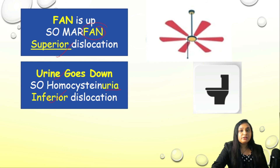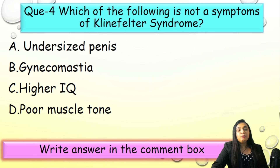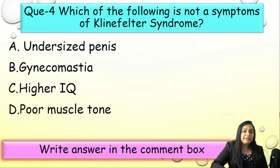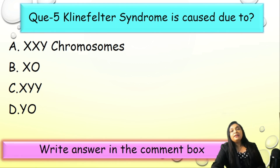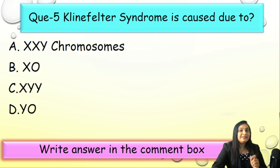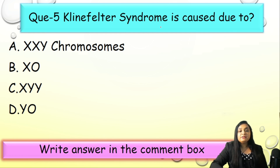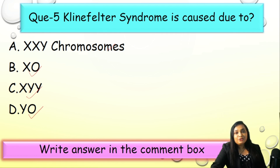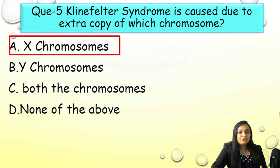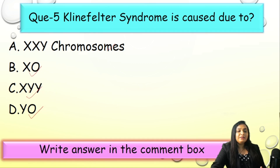Question 4: Which is NOT a symptom of Klinefelter syndrome — A) undersized penis, B) gynecomastia, C) higher IQ, or D) poor muscle tone? Correct answer: C, higher IQ. In Klinefelter syndrome, IQ is low. Question 5: Klinefelter syndrome is caused by — A) XXY, B) XO, C) XYY, or D) YO? Correct answer: A, XXY (double X, Y). This has already been explained in the previous slides.